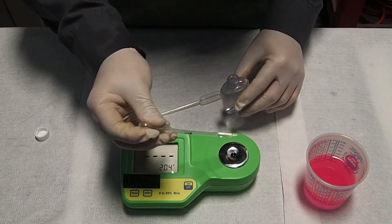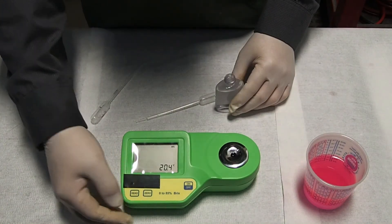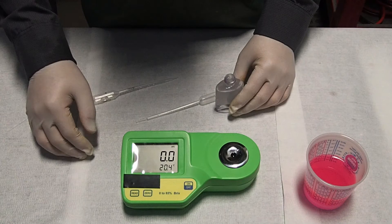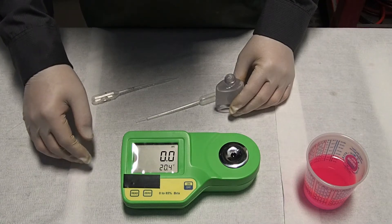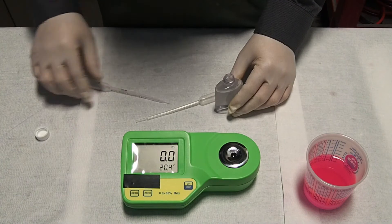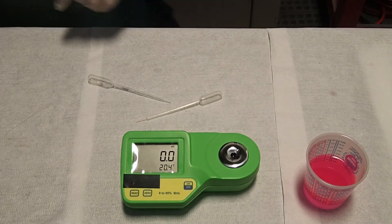We are going to push the read key and the instrument gives us zero percent. This zero percent means that the reference point is set. If not, if we have a different value, we are going to push the zero key and automatically the refractometer will take this reference point.